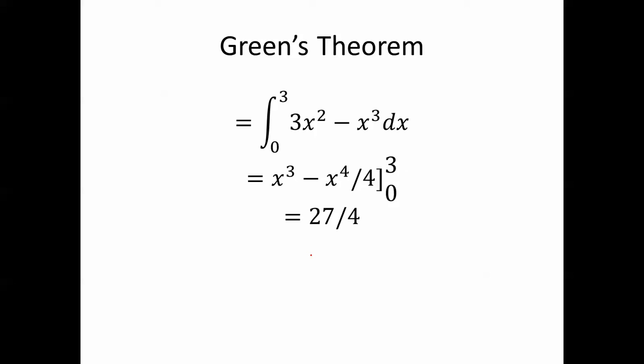This is x cubed minus x to the fourth over 4 from 0 to 3, in other words, 27 fourths.